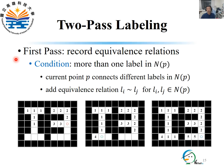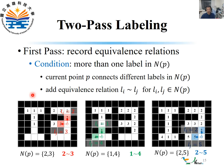At the same time as assigning temporal labels, we also record equivalence relations when there are more than one different labels in N. Since the current point P connects all different labels in N, we add equivalence relations li to lj for all different label pairs in N. In this example, three points have two different adjacent labels respectively. Accordingly, three equivalence relations — 2 to 3, 1 to 4, and 2 to 5 — are recorded.